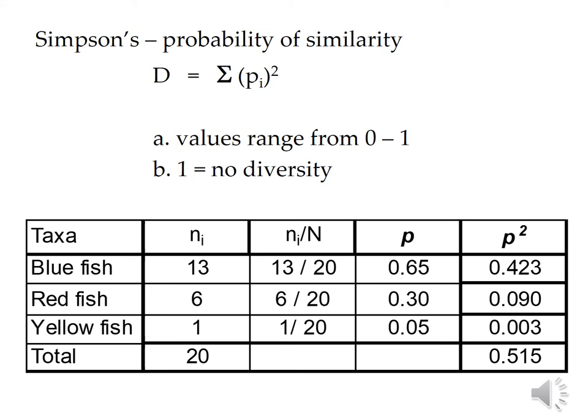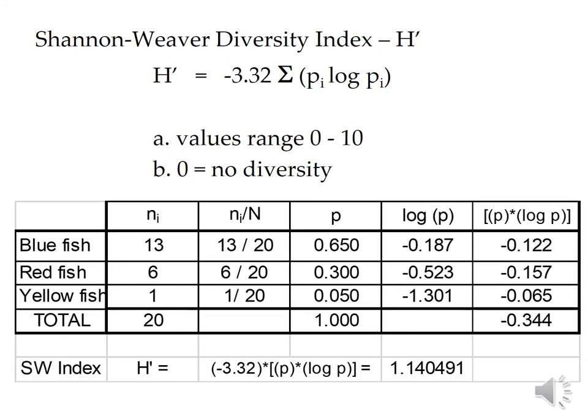That's the downfall of Simpson's — we're not weighting well. Simpson said the more represented you are, the more weight you should carry. But this disregards species richness, giving a lot of weight to species numeric representation and not much weight to taxa niche representation. Shannon-Weaver wanted to compensate for that. What Shannon wanted to accomplish was a means to give more weight to niche representation.